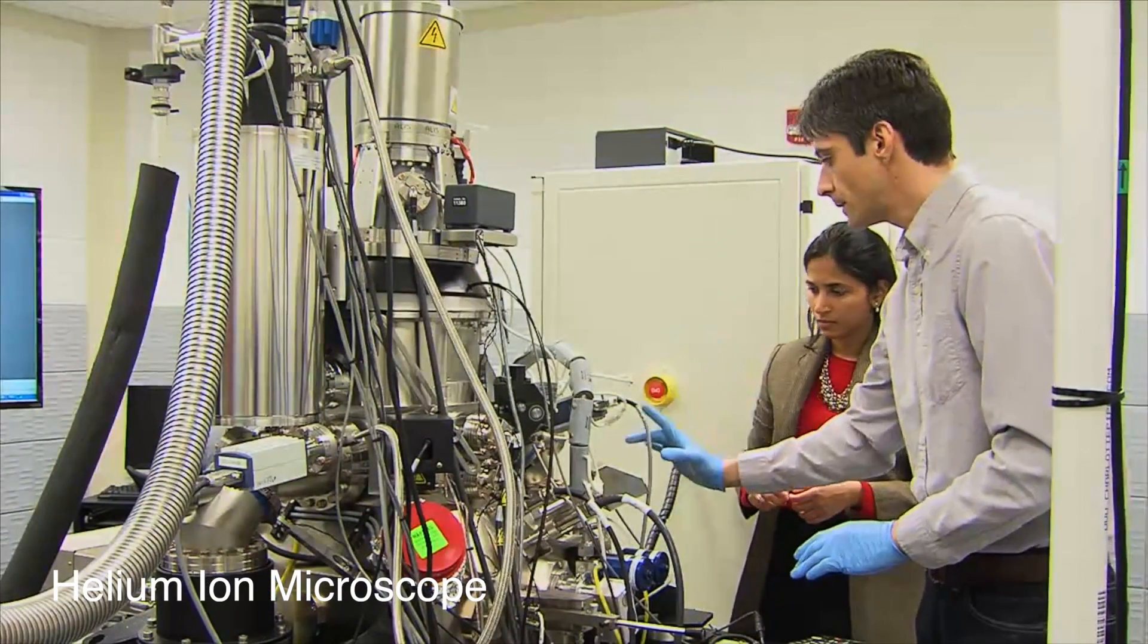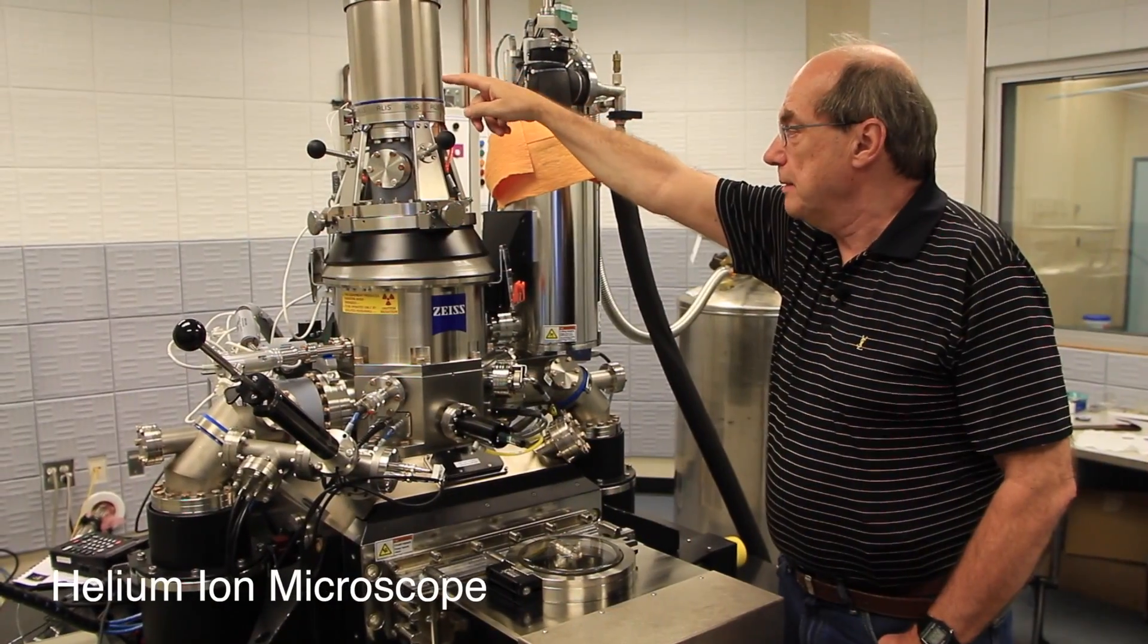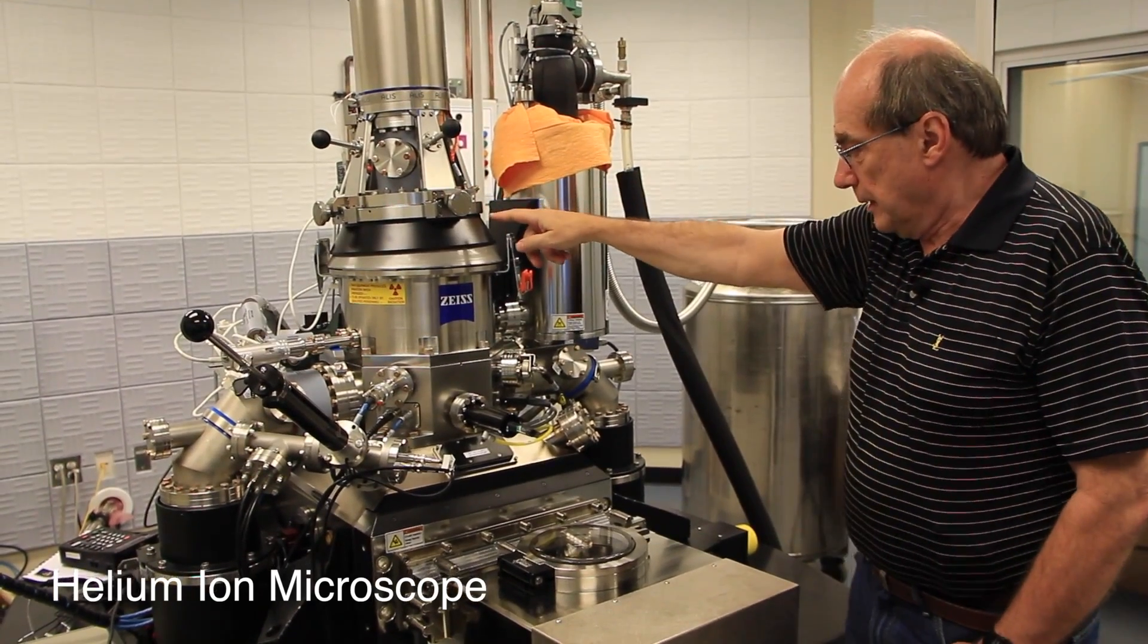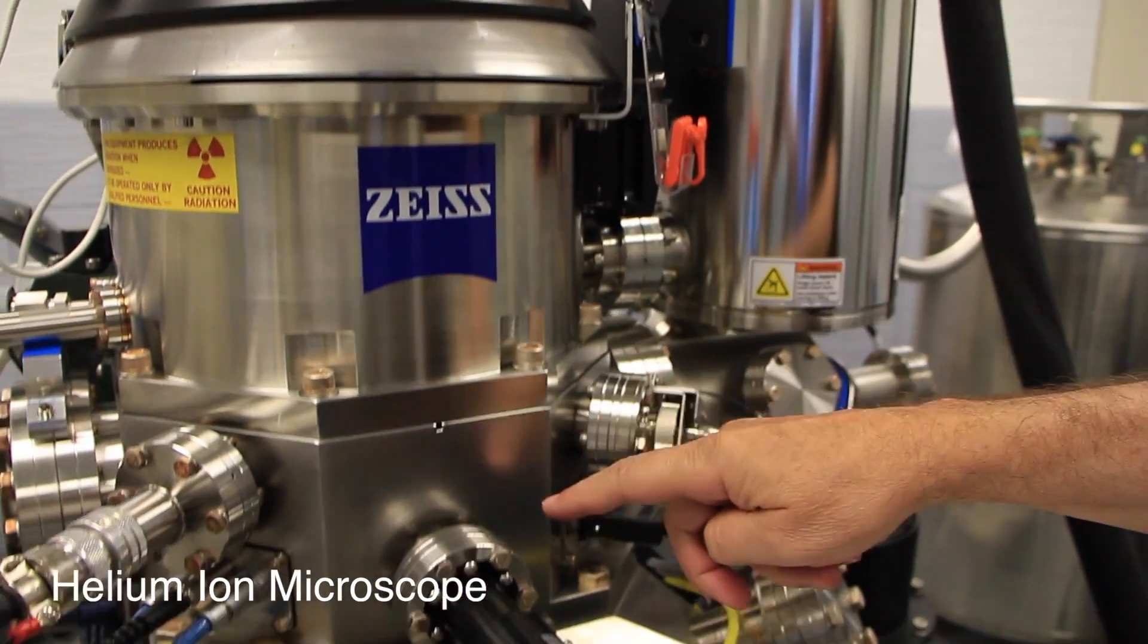We are looking at the helium ion microscope. When you talk about microscopes, most people would think about light microscopes. But we need to look at things that are much, much smaller than that. This is an electron microscope.